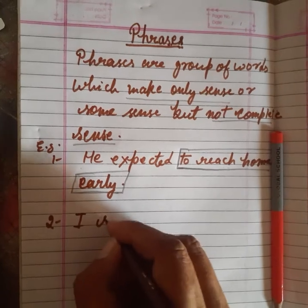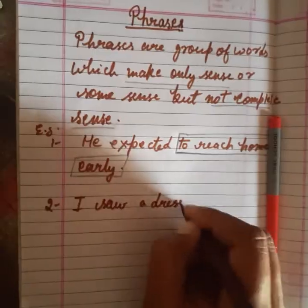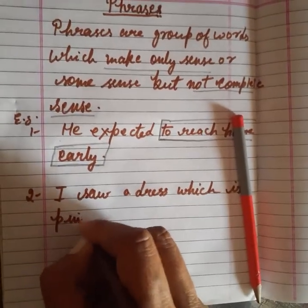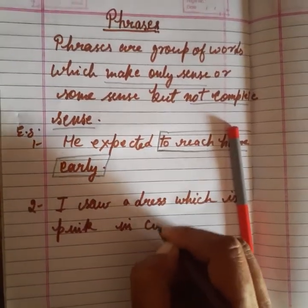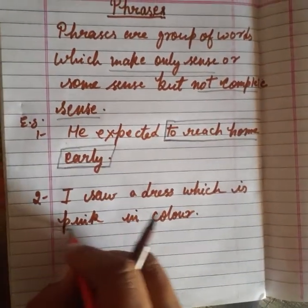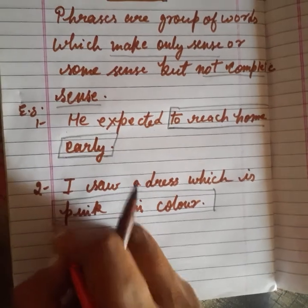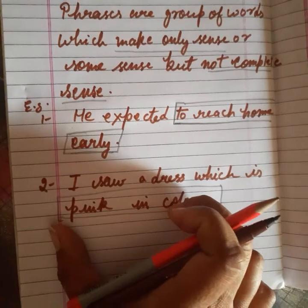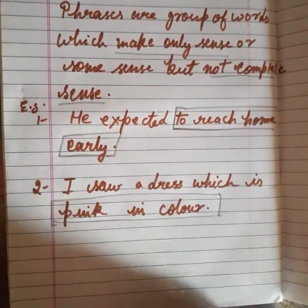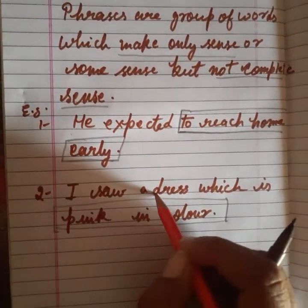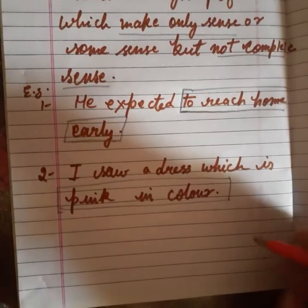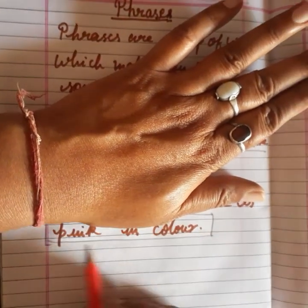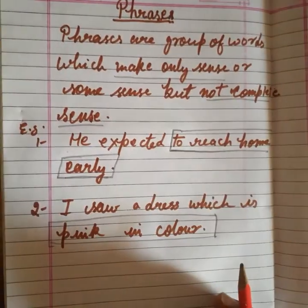Another example: 'I saw a dress which is pink in color.' यहाँ पर 'pink in color' क्या चीज़ हो गई? यह इस sentence में phrase show होगी। इसमें कुछ group of words है — pink in color — इसका कुछ meaning है, कि यह color में कैसी है, pink है। लेकिन क्या चीज़ pink है? अगर हम 'I saw a dress which is' हटा दें, तो खाली 'pink in color' मिलता है। यह group of words phrase है, लेकिन complete sense नहीं देता।